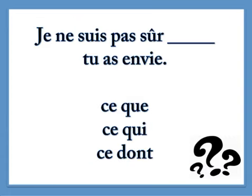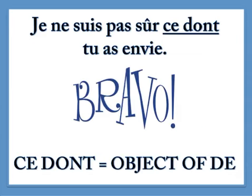Je ne suis pas sûr [blank] tu as envie. This is one where we need ce dont — because ce dont is the object of de. Look at the expression tu as envie: to make a sentence with it, you'd say tu as envie de manger — 'do you feel like eating?' You hear the de? That's your clue — that's why you need dont in the sentence.